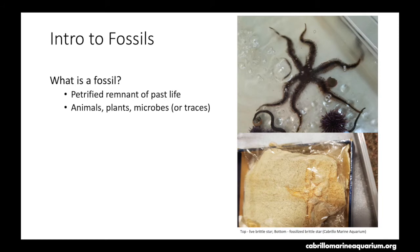Fossils can also include exoskeletons. For plants, we can have leaves, pollen, seeds, or the whole plant. For microbes, we can have individual microbes or microbial mats. And as for traces, these are things left behind by the organisms — it could be eggshell fragments, footprints, coprolites which is fossilized feces, or burrows for burrowing animals.